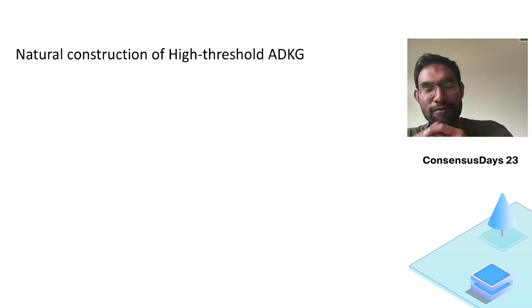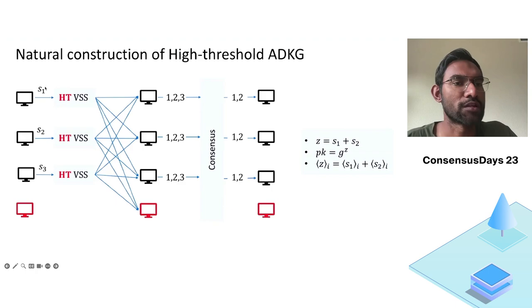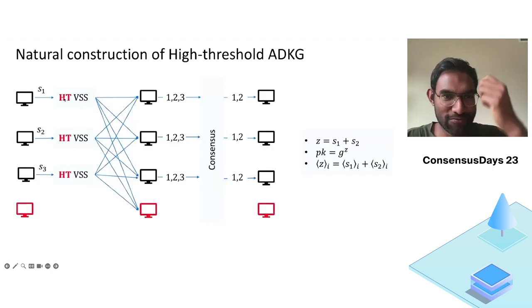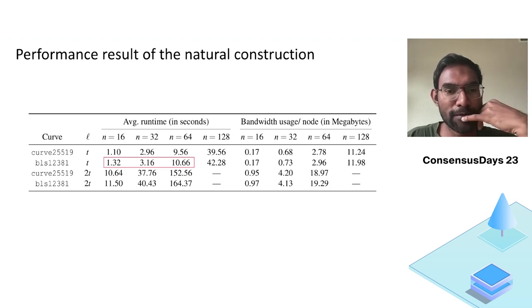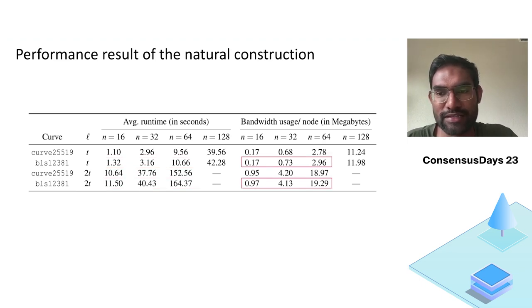So given this general framework, what's the natural construction of high threshold DKG? Simply use the high threshold verifiable secret sharing where nodes can share the secret using a larger degree polynomial. When you do this, the rest of the framework remains the same. But high threshold verifiable secret sharings are very expensive in asynchrony. If you follow the previous framework, which we did in our previous paper, we see that we get performance which is bad. For example, with low threshold, it takes about 10 seconds with 64 nodes, but with the threshold of 2t, it takes 164 seconds, about 16 times or 15 times higher. Similarly, it has much worse, 6 to 7 times higher bandwidth usage. So we cannot use it. That's not the most suitable way to do it.